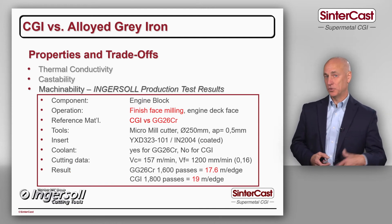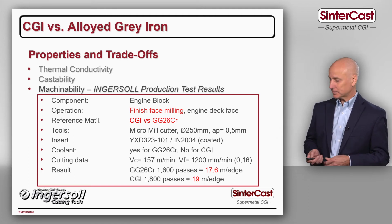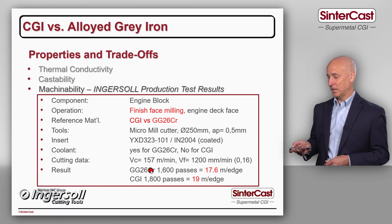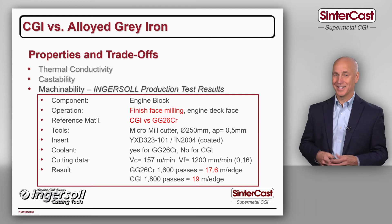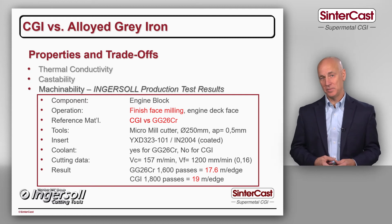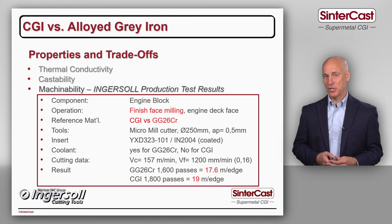Moving from Sandvik to Ingersoll, this example is on a cylinder block again comparing CGI with alloyed grey cast iron. They're comparing CGI to grey iron with 260 MPa tensile strength, increased because of the chrome alloy addition. For the chromium alloyed grey iron, they have 1,600 passes — 17.6 meters per cutting edge. And in CGI, 19 meters per cutting edge. So again, the machinability of alloyed grey iron and CGI is effectively the same, and frequently CGI will be better.